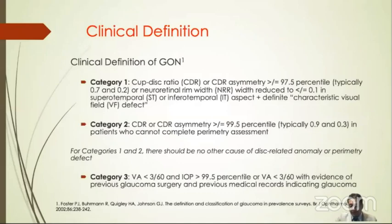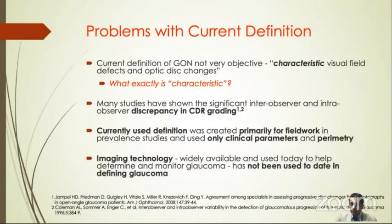The current definition widely used comes from a paper 20 years back by Foster et al., that specifically looks at clinician grading of the nerve head — for example, cup-disc ratio of more than 0.7 or disc asymmetry of more than 0.2 with associated characteristic visual field defects — to denote glaucoma. But the problem is it's very subjective. Many studies have shown significant inter- and intra-observer discrepancy in cup-disc ratio grading. Currently, imaging technology, specifically optical coherence tomography or OCT of the retinal nerve fiber layer, OCT-RNFL, is widely available.